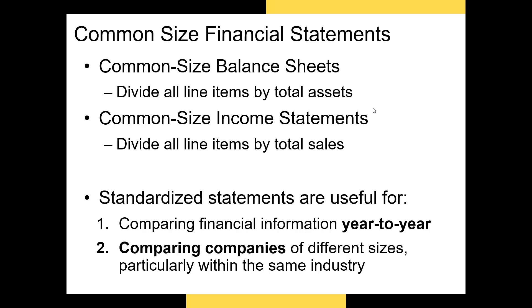Common-size financial statements scale all line items on each statement based on the largest line item. Common-size balance sheets divide all line items by total assets, while common-size income statements divide all line items by total sales. By standardizing these financial statements, we can do two things: first, compare a company's financial information year over year — for example, the percent of total assets represented by cash in 2010, 2011, 2012, etc. Second, we can compare the percent of cash Google has on its balance sheet to the percent Apple has, relative to total assets.